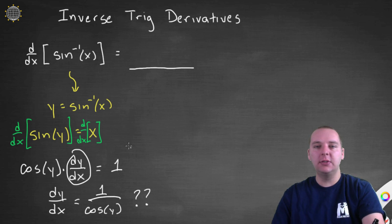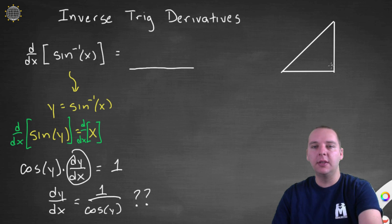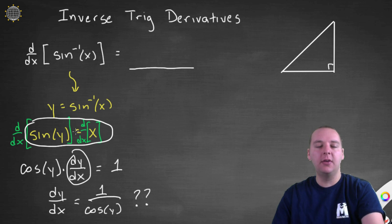So we can say dy dx equals 1 over cosine of y, and we're almost done, but this is a little confusing in the sense that I was expecting to get the derivative to be a function of x, not a function of y, so we have a little bit of work to do. So now, we've done this trick before, but we're actually going to create a right triangle here.